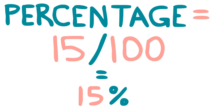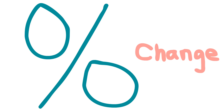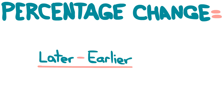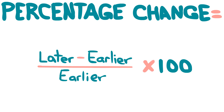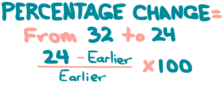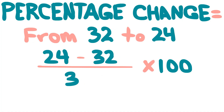To calculate a percentage increase or decrease, follow this formula: percentage change equals later minus earlier, divided by earlier, times 100. To get the percentage change from 32 to 24, plug in 24 minus 32, divided by 32, multiplied by 100, and then you get it.